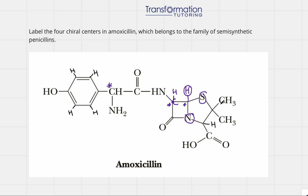This carbon contains two of the same groups — two methyl groups — so it cannot be a chiral center. Remember, we want a chiral center to be a carbon with four different groups. This one has two identical groups, so it cannot be a chiral center.